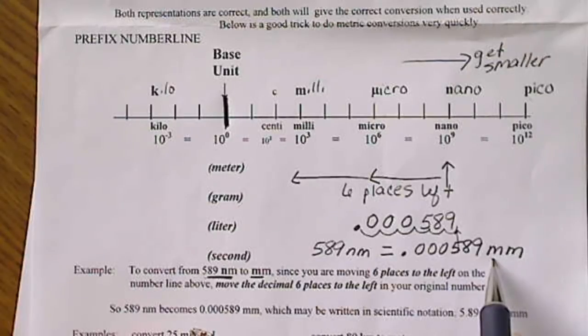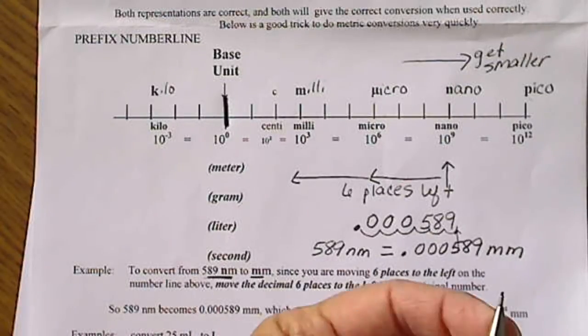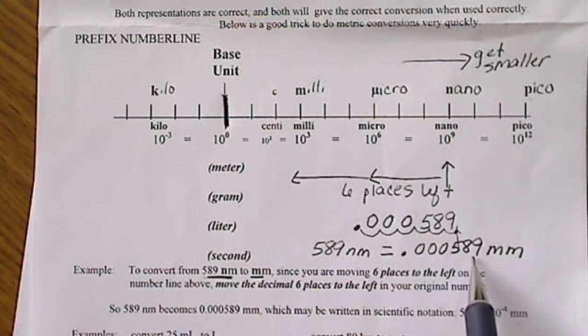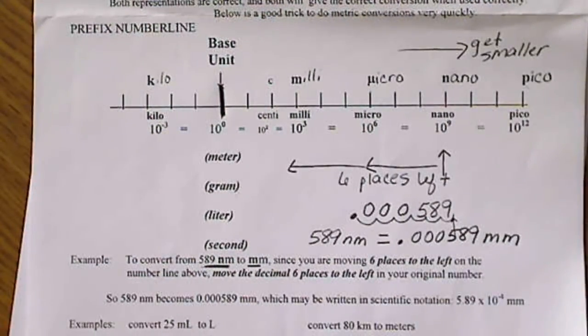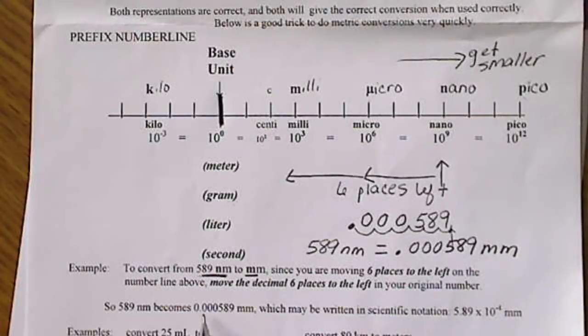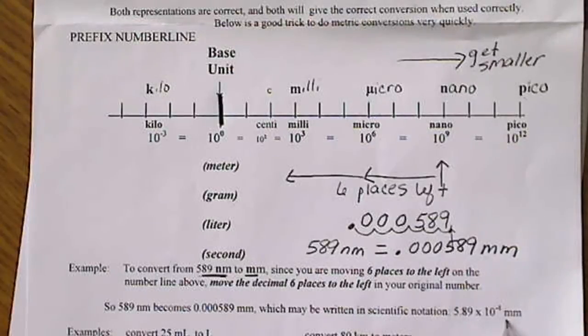And remember, a millimeter is about the width of this pencil lead. So there's no possible way that we're going to be able to see this with our naked eye either. And if we look at the notes down here, this number that we just converted to in millimeters could be written in scientific notation as 5.89 times 10 to the minus 4th millimeter.